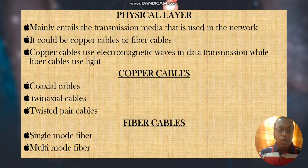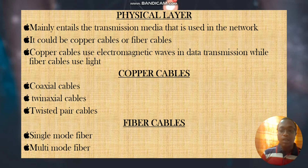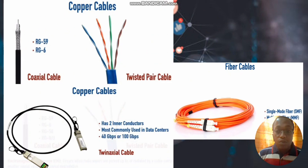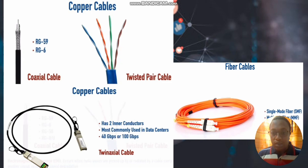In fiber cables, we have single-mode fiber and multimode fiber, defined by the thickness of the glass making up the fiber cable. Here is a demonstration of the coaxial cable, the twisted wire cable, and the twinax cable, as well as fiber cables. Single-mode fiber cables are usually orange or yellow in color, while multimode fiber is blue in color.